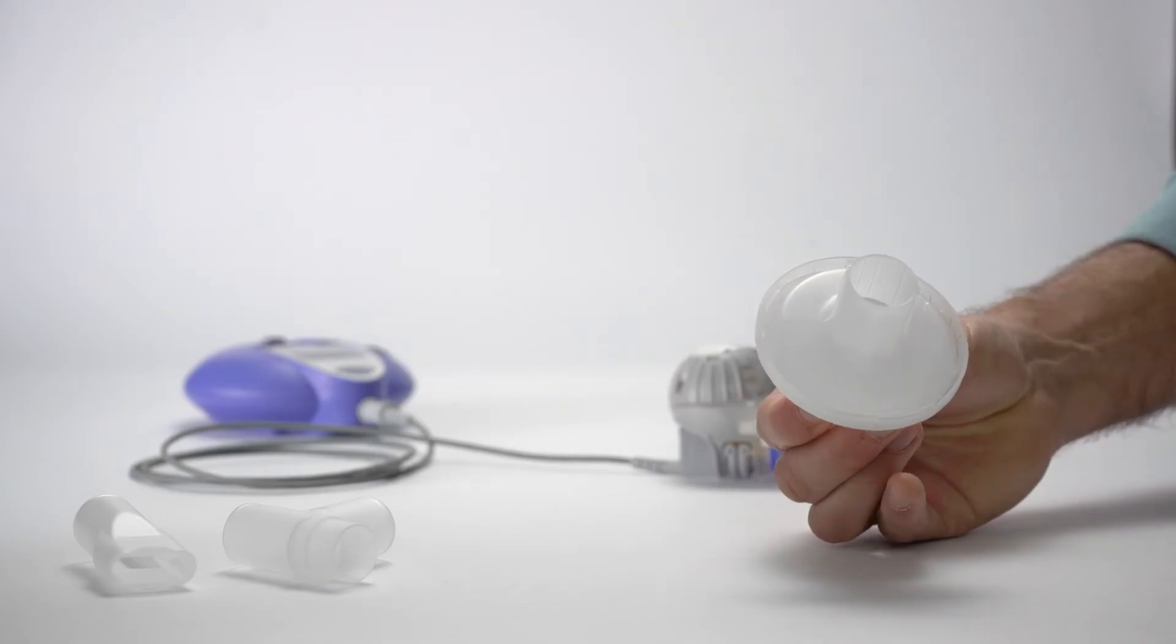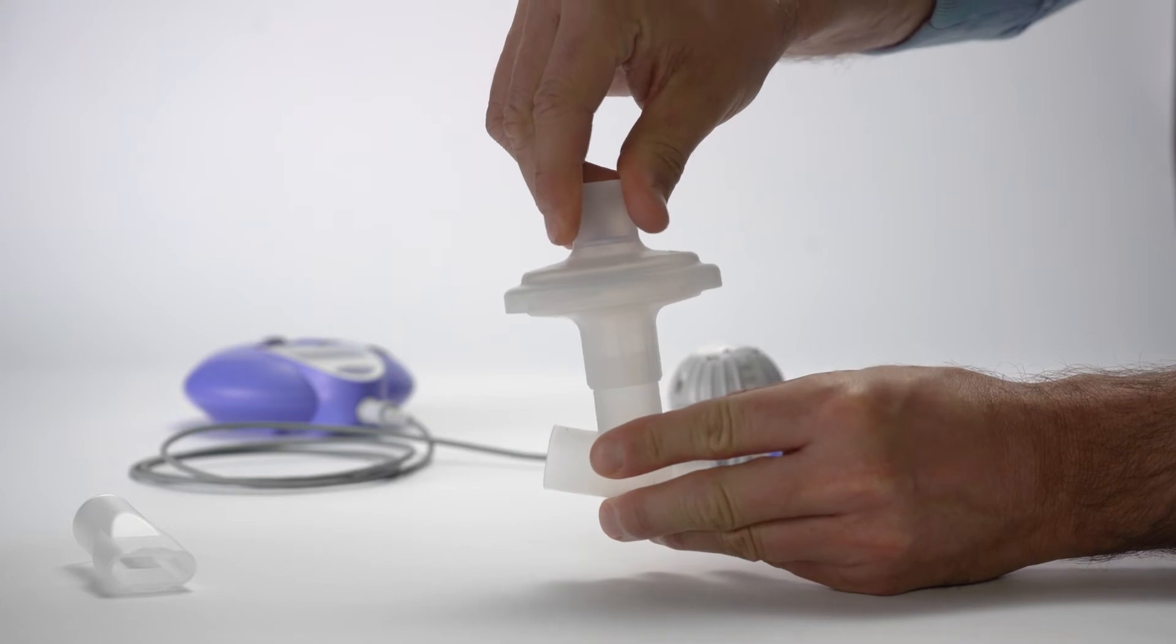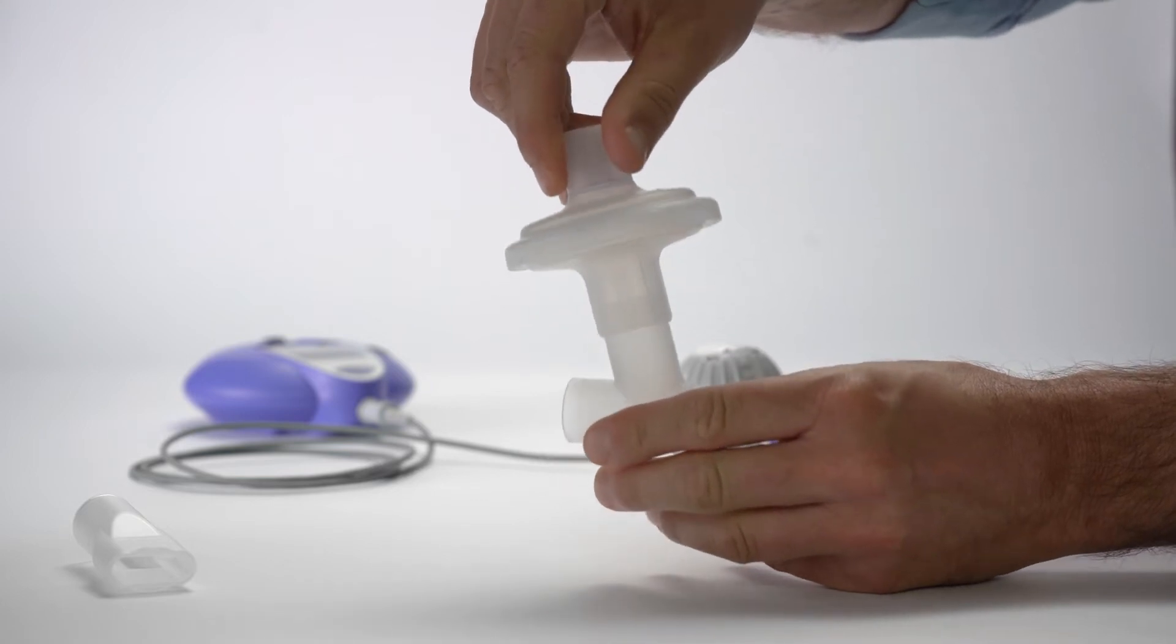Then insert the Y piece into the exhalation filter. Do this by attaching the ribbed lower section of the assembled exhalation filter to the angled arm of the Y piece.